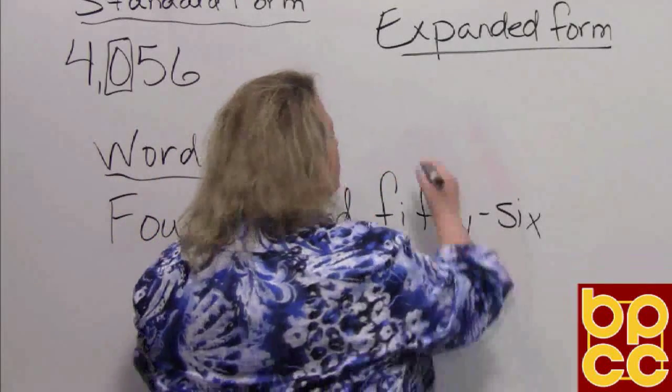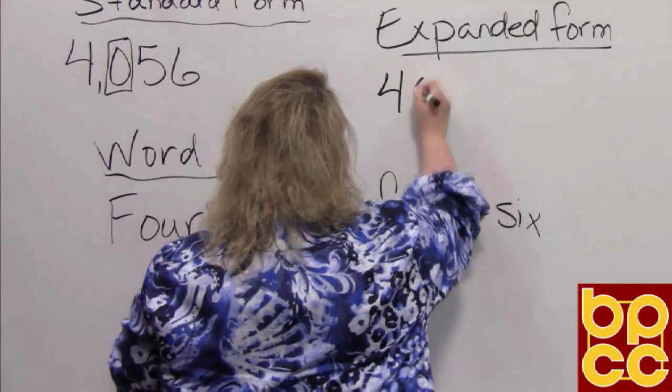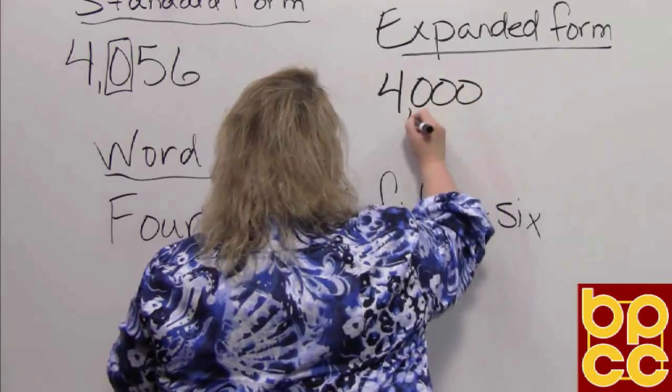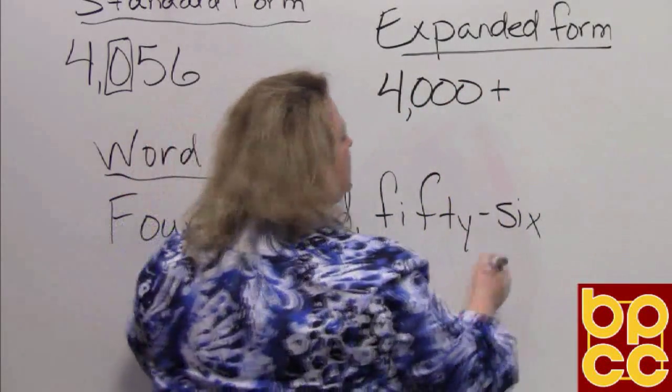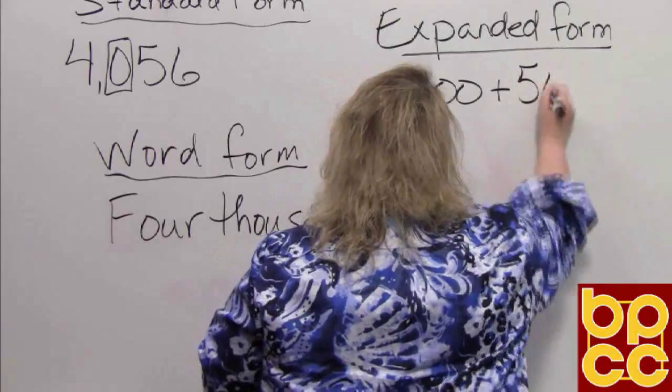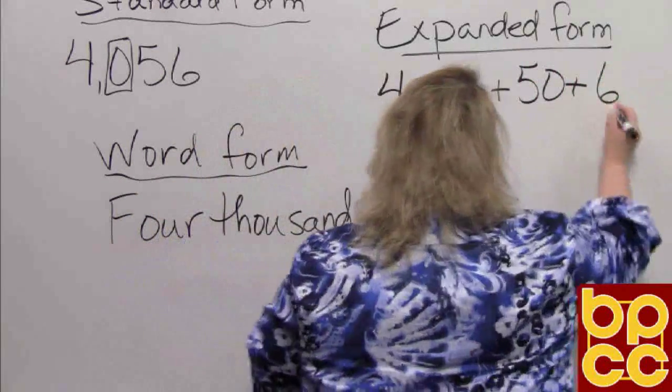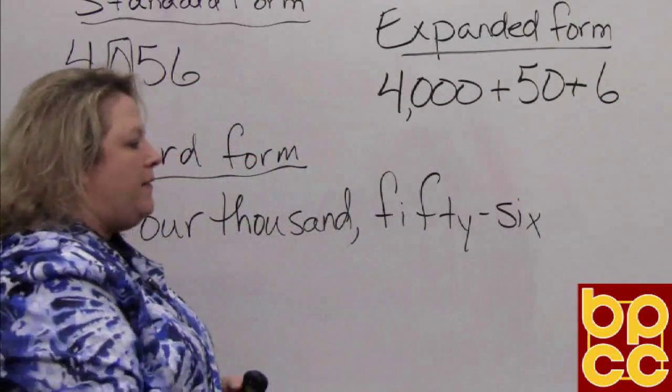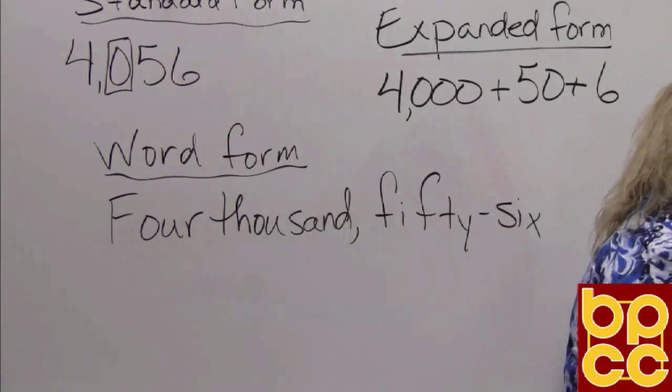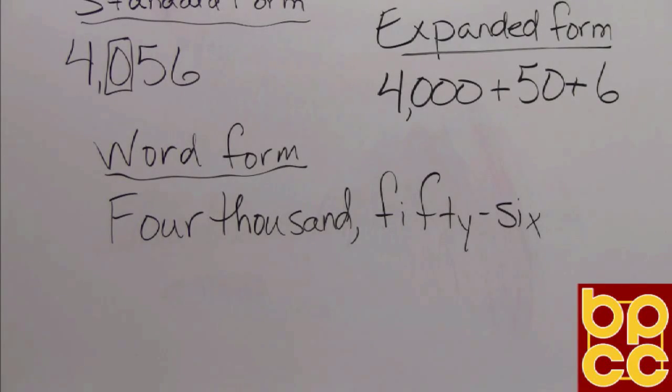So the four is in the one thousands place, so that is going to be 4000 plus the five is in the tens place so that's going to be fifty, five groups of ten. The six is in the ones place so that is going to be six. And that is how you do all three forms of writing numbers.